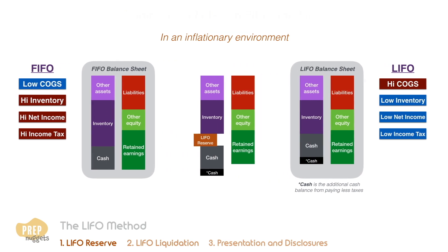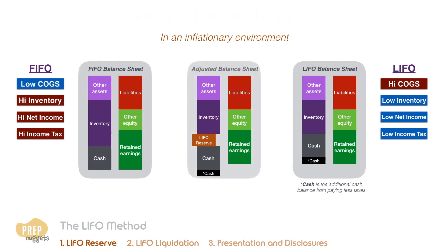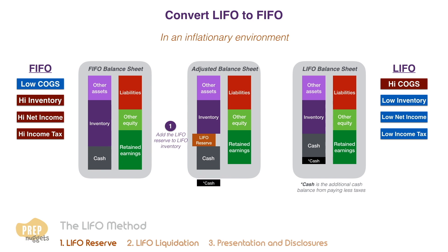To make the adjustment, the first step the analyst has to take is to add the LIFO reserve to LIFO inventory on the balance sheet. As there is a surplus of cash from the lower taxes paid, the next step is to remove this from the cash balance. This amount is the LIFO reserve multiplied by the tax rate.